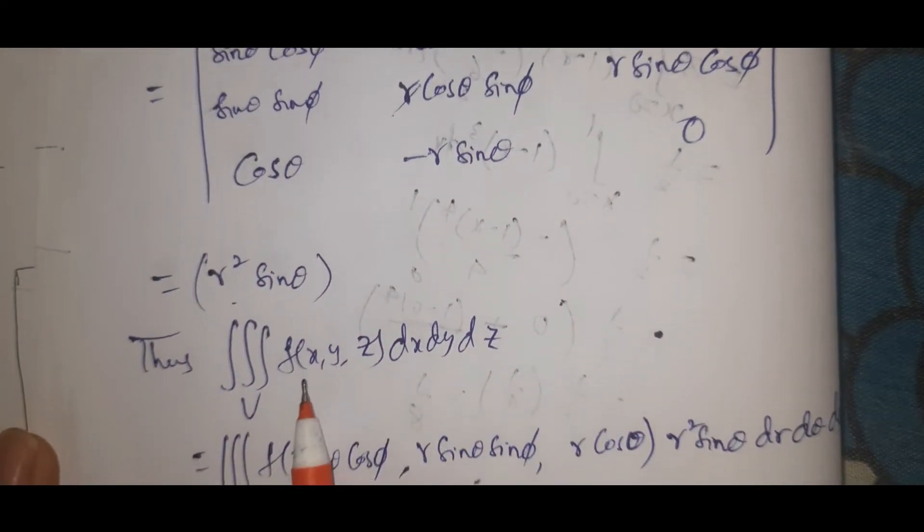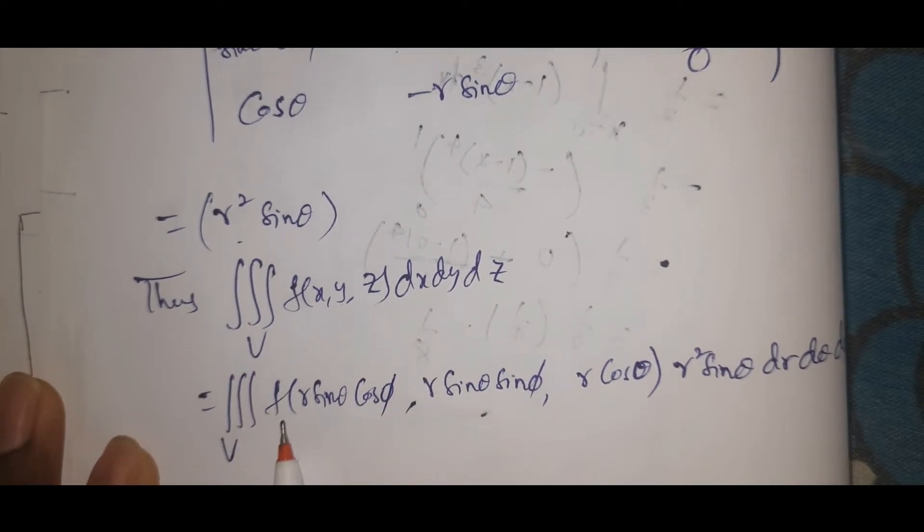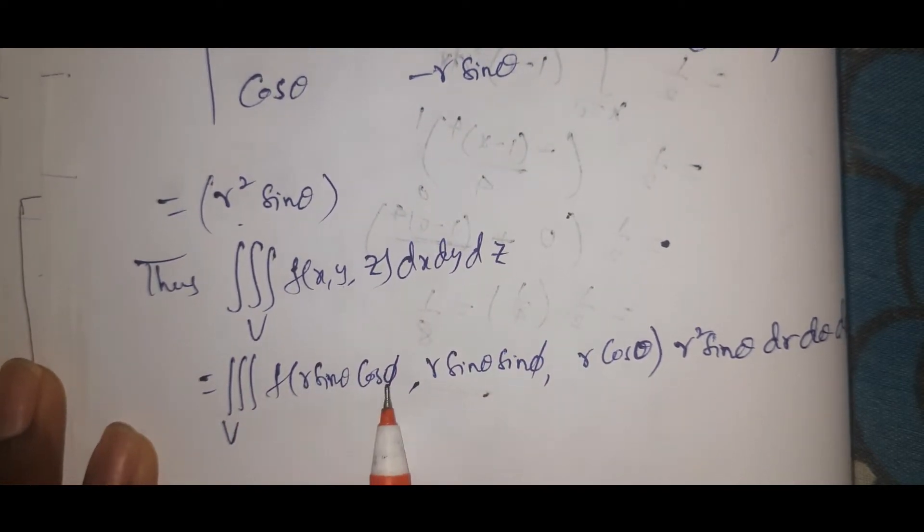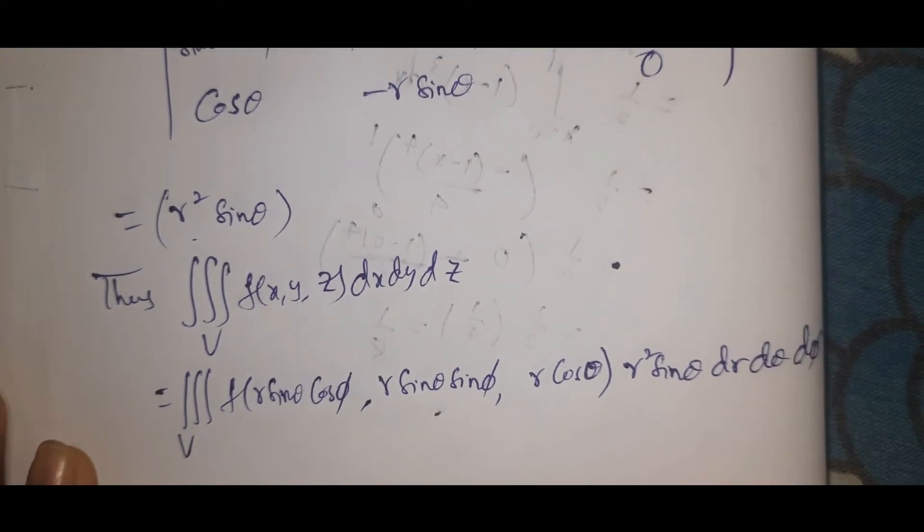Thus, triple integral V F(X,Y,Z) dX dY dZ equals triple integral V (R sin theta cos phi, R sin theta sin phi, R cos theta) R² sin theta dR dtheta dphi.